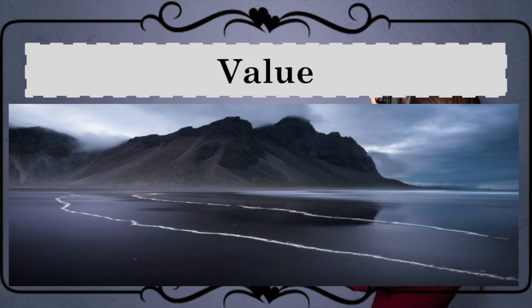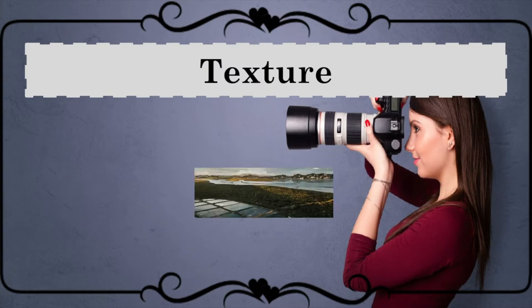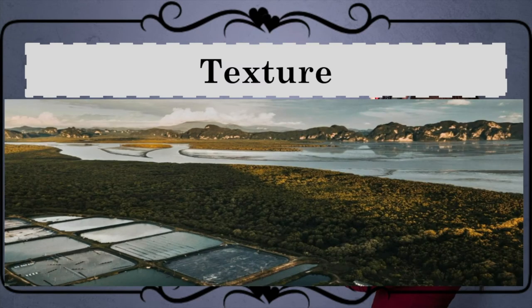Space gives depth to the image and suggests the distance between different objects and perspective. Value is also known as tone. Tone is another expression seen in some photos — it gives details to the parts of your photos that you want to highlight.